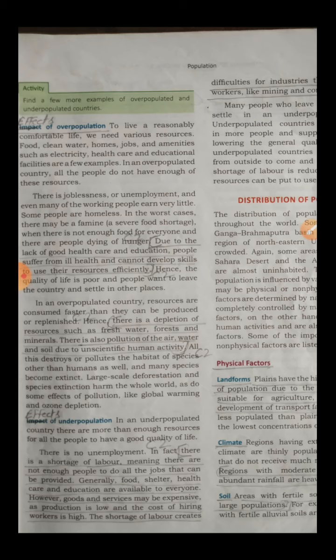Depletion means resources will go fast — food will end fast, fresh water will not be there. All this is called depletion of fresh water, forest, and minerals. There is also pollution in such countries — water pollution, soil pollution — happening due to unscientific human activity. When things are polluted, this destroys the habitat of species and many species become extinct. Large-scale deforestation and species extinction harm the whole world, as do effects of pollution like global warming and ozone depletion.